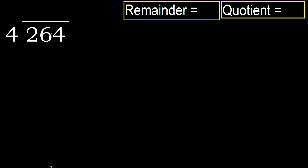264 divided by 4. 2 is less, therefore next. 26 is not less, therefore with 26 — 4 multiplied by which number is nearest to 26 but not greater?